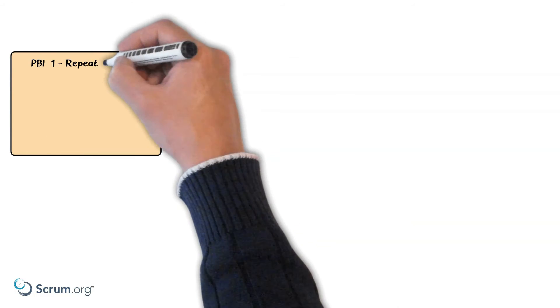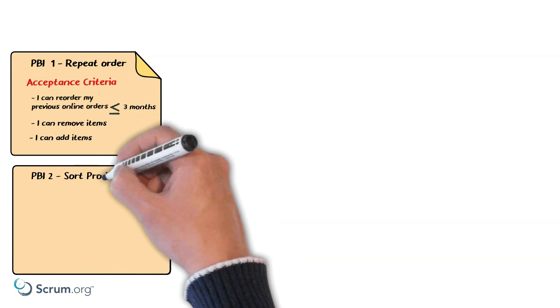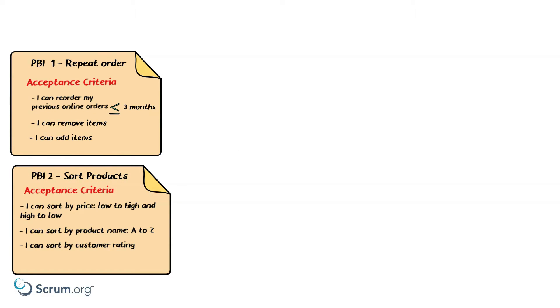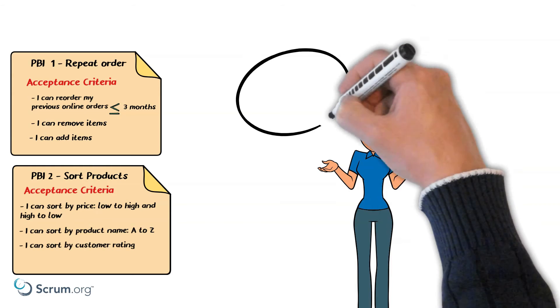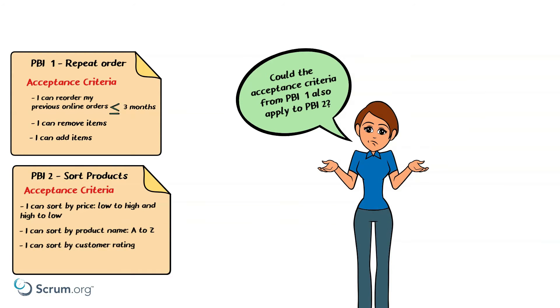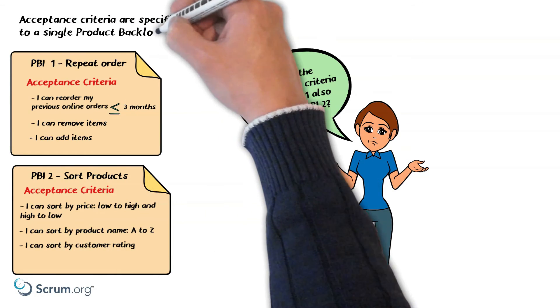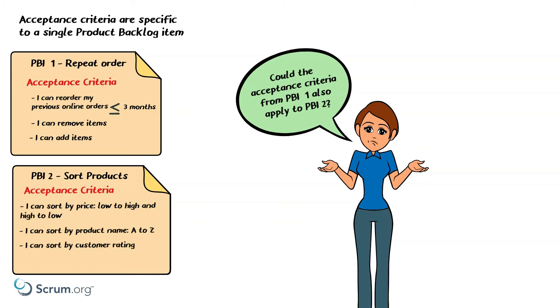First, the team wants to explore the confusion they have about acceptance criteria versus the definition of done. Robin shows two example product backlog items: one for a feature that allows customers to place repeat orders on the website, and another that enables customers to sort products on a results page. She asks everyone to compare the acceptance criteria of both items. The team quickly establishes that acceptance criteria are specific to a single product backlog item.